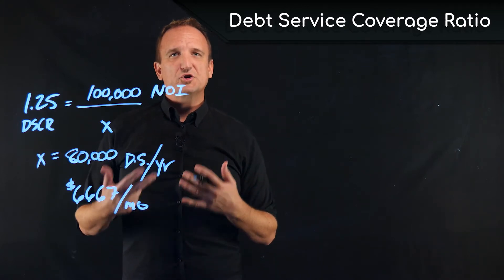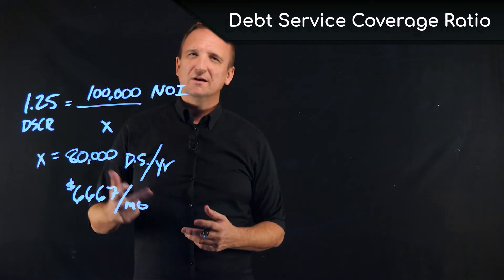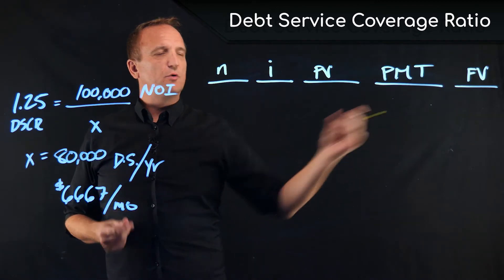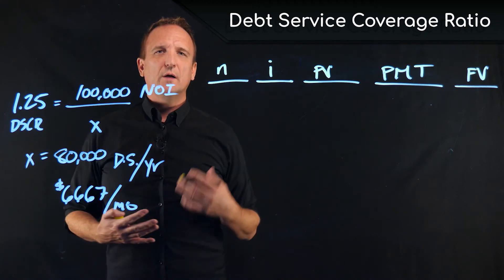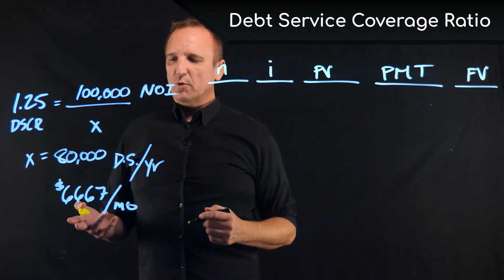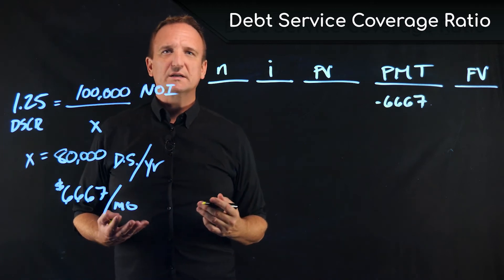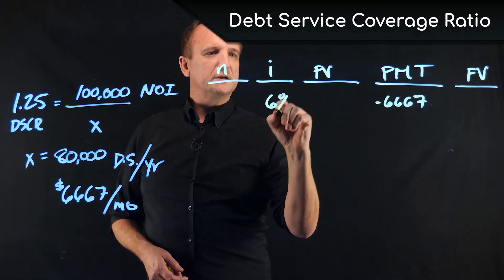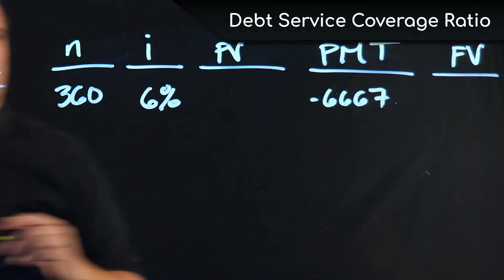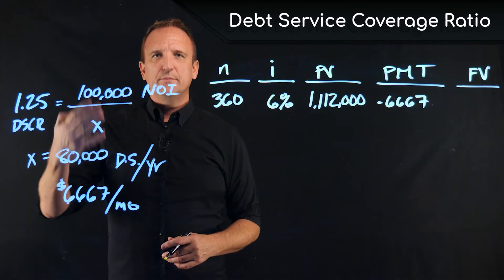Let me show you how this would be calculated in the face of changing interest rates or a shorter amortization period. I'm going to lay this out the way we would in a financial calculator — check out our other videos on financial calculators and calculating debt service, present value, etc. In this example, I'm using a 30-year fixed loan with monthly payments at 6%, fully amortizing. We've determined our maximum monthly payment can only be $6,667. At 6% over 360 months, that gives us a maximum potential loan of $1,112,000.